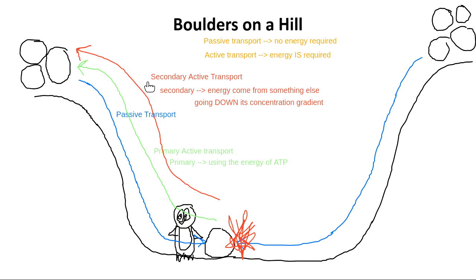In secondary active transport, we always have something else being transported as well. That something else is going down its concentration gradient — going down the slope — and that will be the energy that pushes the other thing up its slope. In secondary active transport, there are always going to be two things moving.